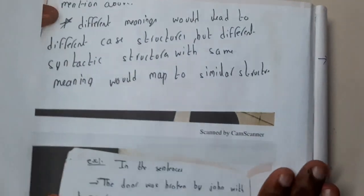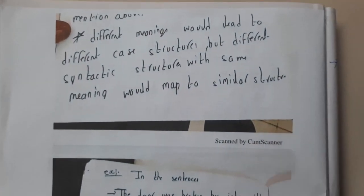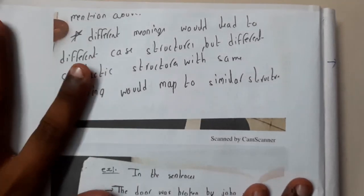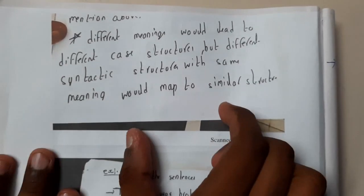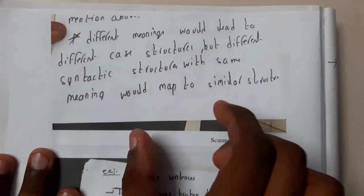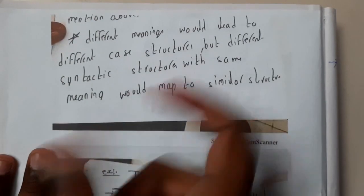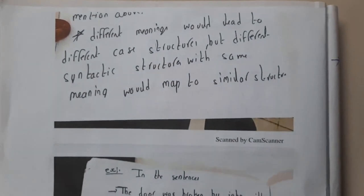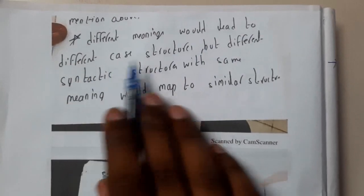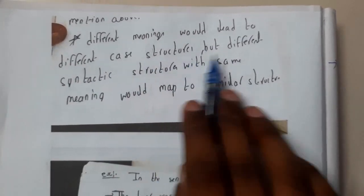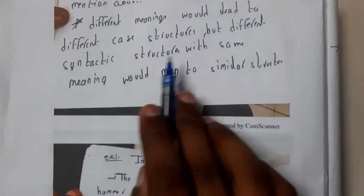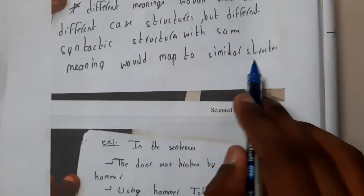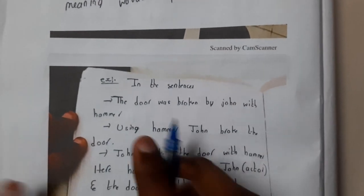Different sentences can have different meanings. The semantic difference means you get the same meaning from a sentence but the way it is organized is different. Different meanings lead to different case structures, but different syntactic structures with the same meaning will map to a similar case structure.